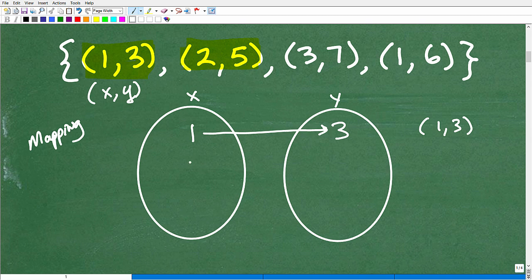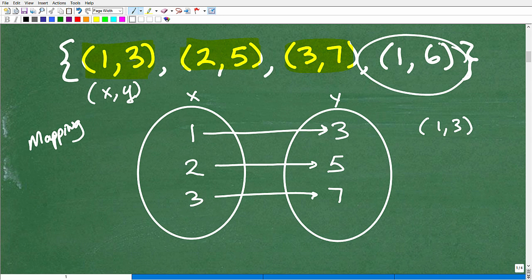So let's do this for each point. And then I'll explain to you how we determine if this is a function or not. Okay, so 2 is going to go to 5. So 2, we put a 2 here. Then we'll put a 5 here. So 2 maps to 5. And then we got (3,7). So 3 maps to 7. So far, so good.